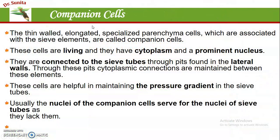The second component is companion cells. Companion cells are the thin-walled elongated cells and specialized parenchyma cells which are associated with the sieve elements, acting like a friend of sieve elements. That is why these are known as companion cells. These are living cells having full cytoplasm and a prominent nucleus.